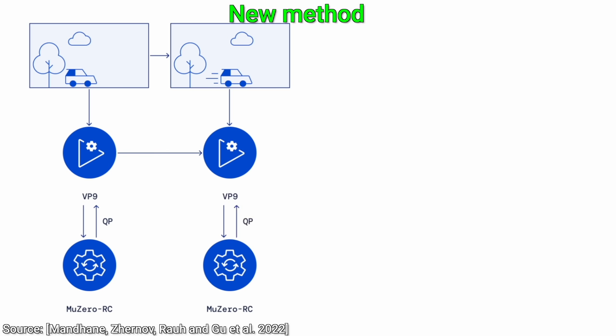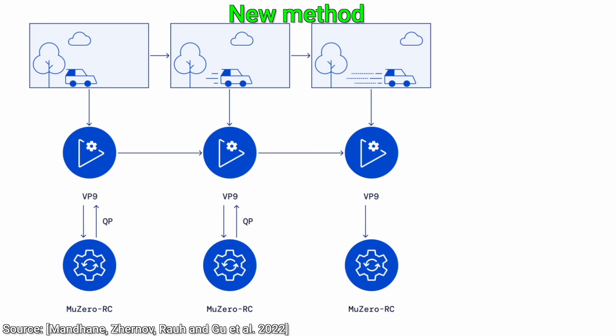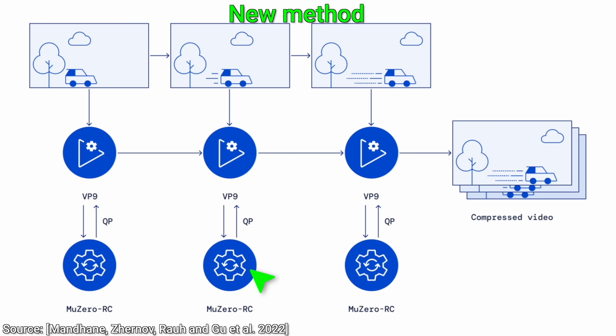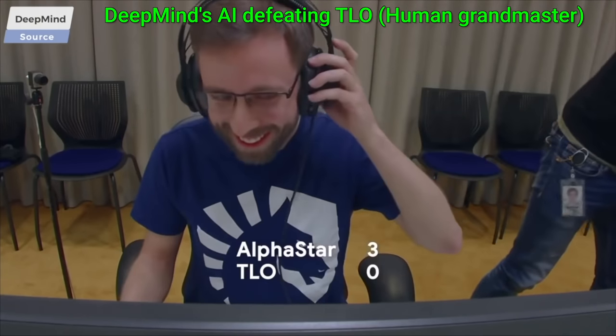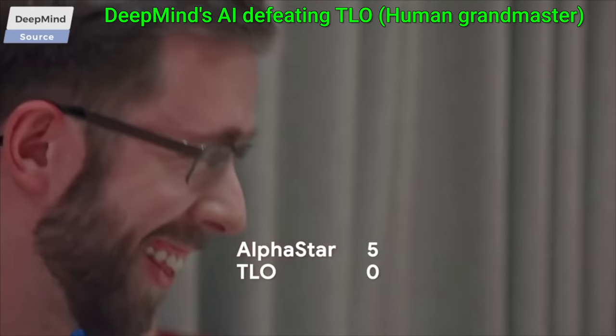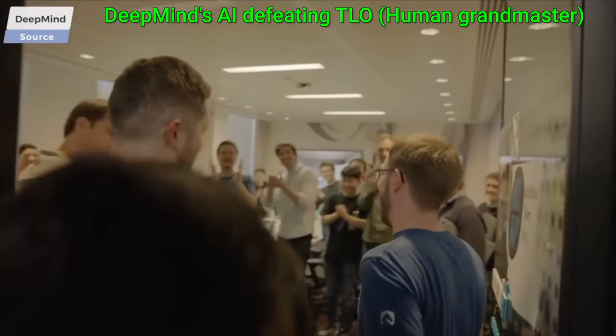But there needs to be a score. So what is the score here? How do we win? Well, we win if we are able to choose the parameters such that the quality of the output video is as good as the previous compression algorithms, but the size of the video is smaller. The smaller the output video, the better. That is going to be our score.